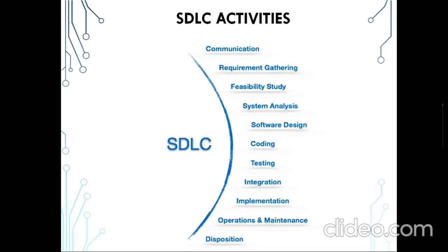The next phase is software design, where software is designed according to the requirements, and coding is written once designing completes. After coding, the testing phase is performed, followed by the integration phase where all modules are integrated together as a system and implemented at the user end — we release the system at the user desk, which is implementation. Finally, the operations and maintenance phase covers training and software maintenance, and the last stage is disposition.